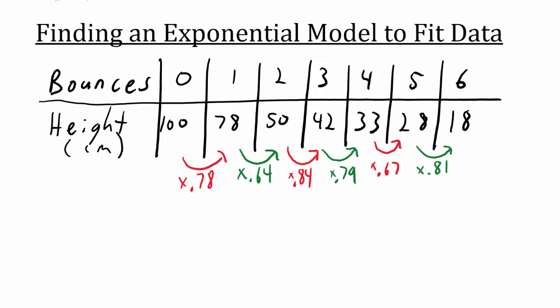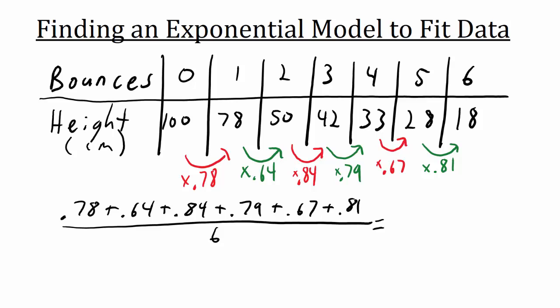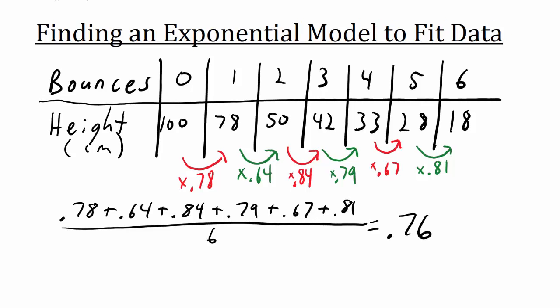To find the average, let's add them all up and divide by how many there are. We can use this estimate as the multiplier for our equation.